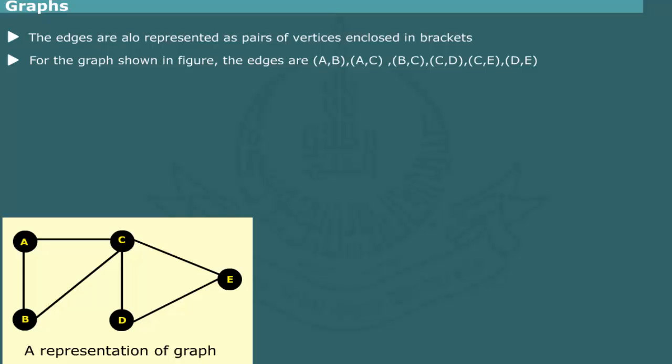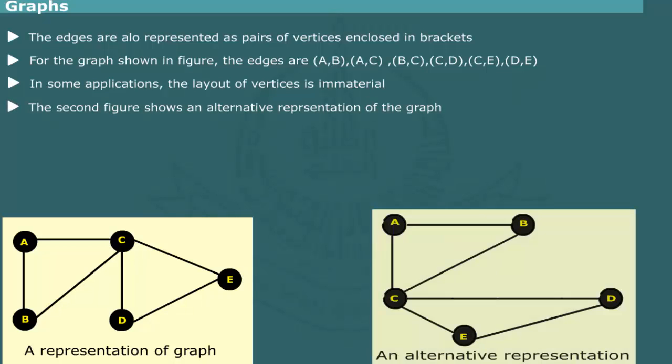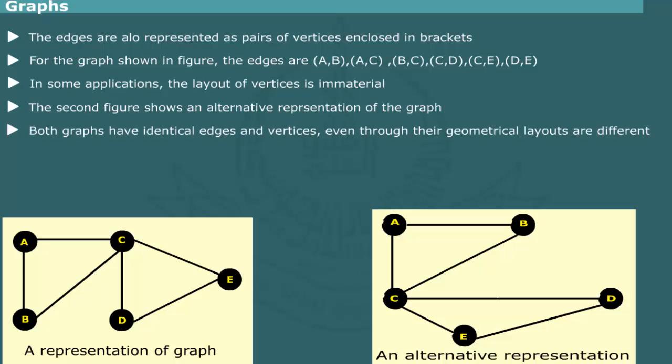It is emphasized that in pictorial representation, the location of vertex is immaterial for some applications. Thus, vertices can be laid out in several ways. For example, this figure is an alternative representation with a different geometrical configuration of the same set of vertices and edges. Although these two pictorial representations give different looks, they represent the same set of data elements in the graph.